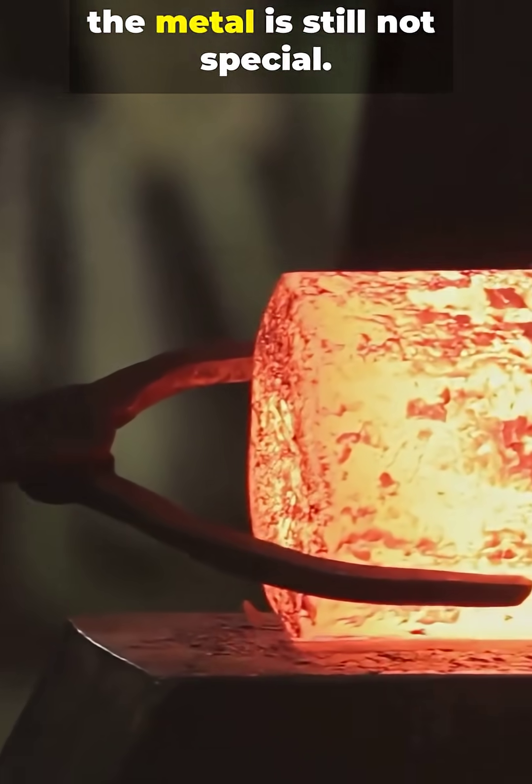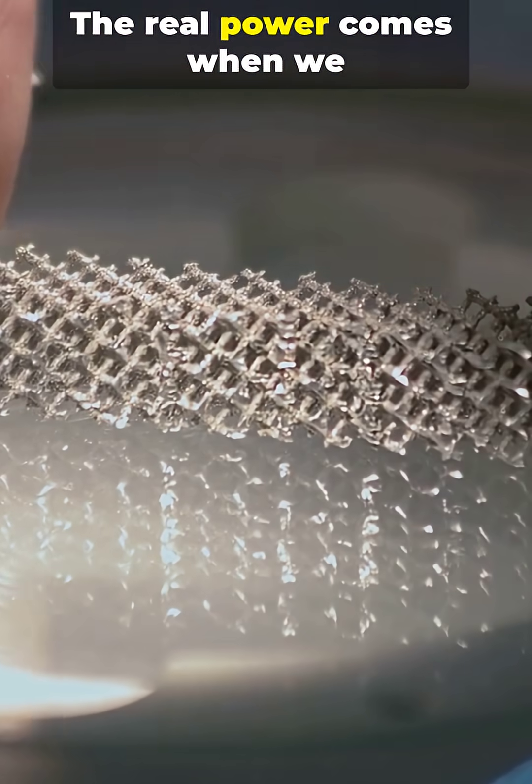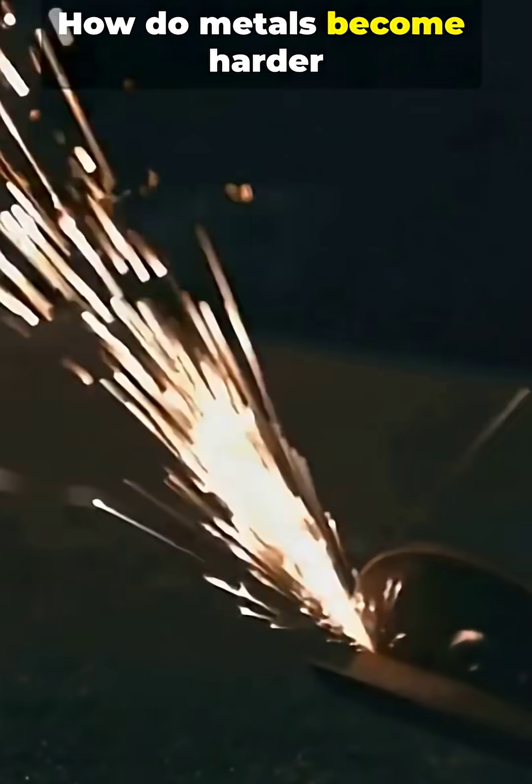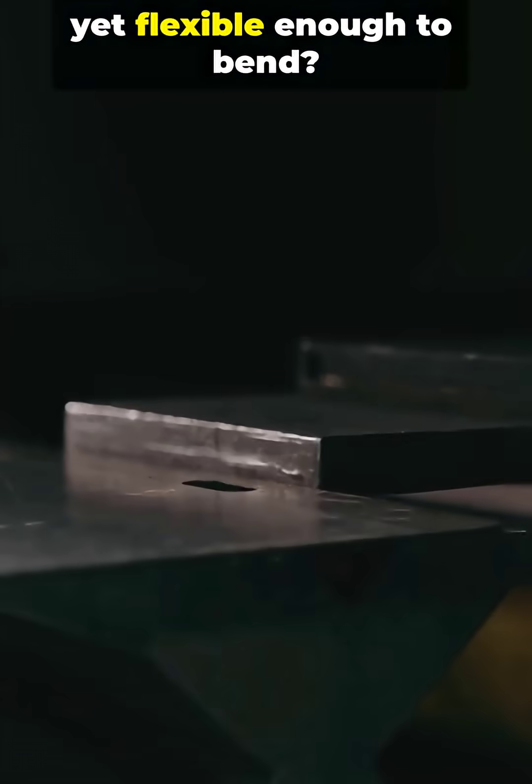But even after extraction, the metal is still not special. The real power comes when we rearrange its atoms. How do metals become harder than steel, yet flexible enough to bend?